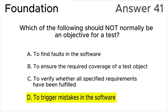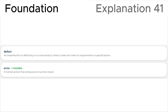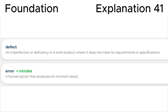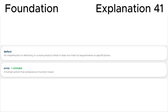My recommendation: be very careful when the question contains the word 'not' — it might confuse you. In the explanation, let's look at the definitions of 'mistake' and 'defect' in the ISTQB glossary. A mistake, or error, is a human action that produces an incorrect result. Why should we repeat a human mistake? It is definitely not a normal test objective.